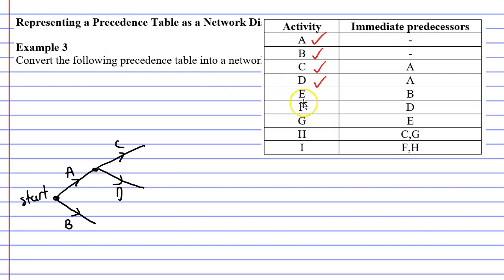Now moving on to activity E, we can see that that comes after activity B. So we need to complete activity B by drawing a vertex and then draw activity E. And we'll just tick that off.